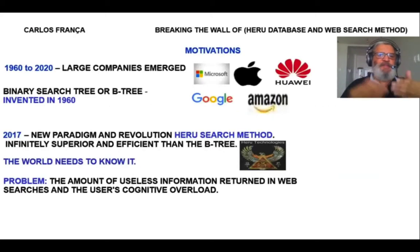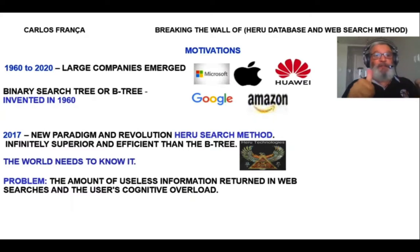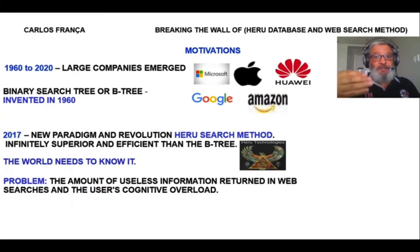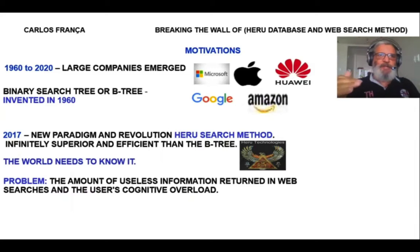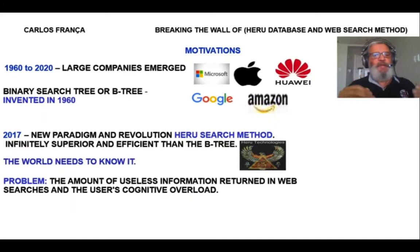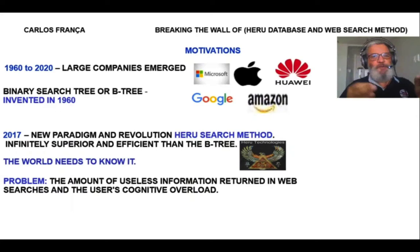In the past 60 years, a server computer algorithm called the binary search tree, or B3, was invented. What is B3? What is a binary search tree? It's a computational resource to store and make information available on the web. We had advances in the algorithm; however, database search and web search remained the same. Finally, I broke this wall.